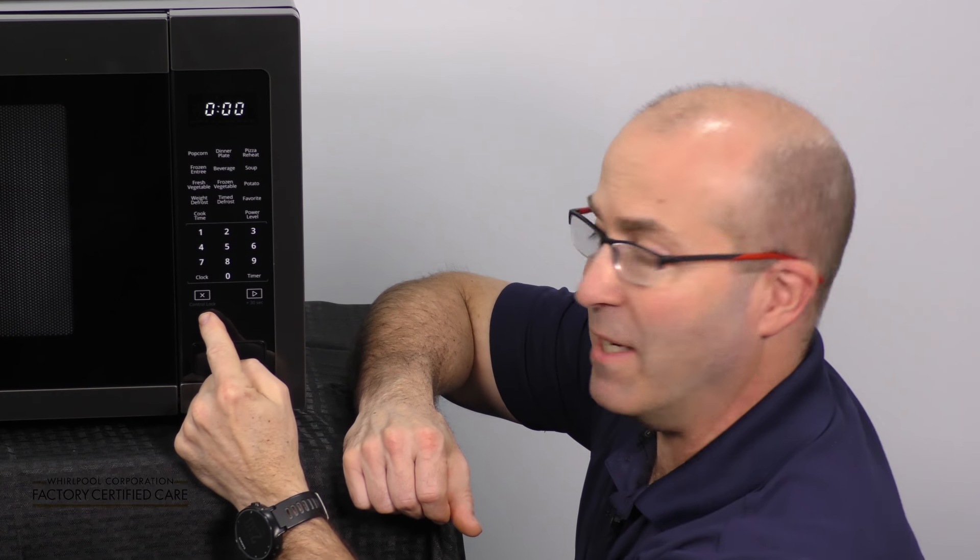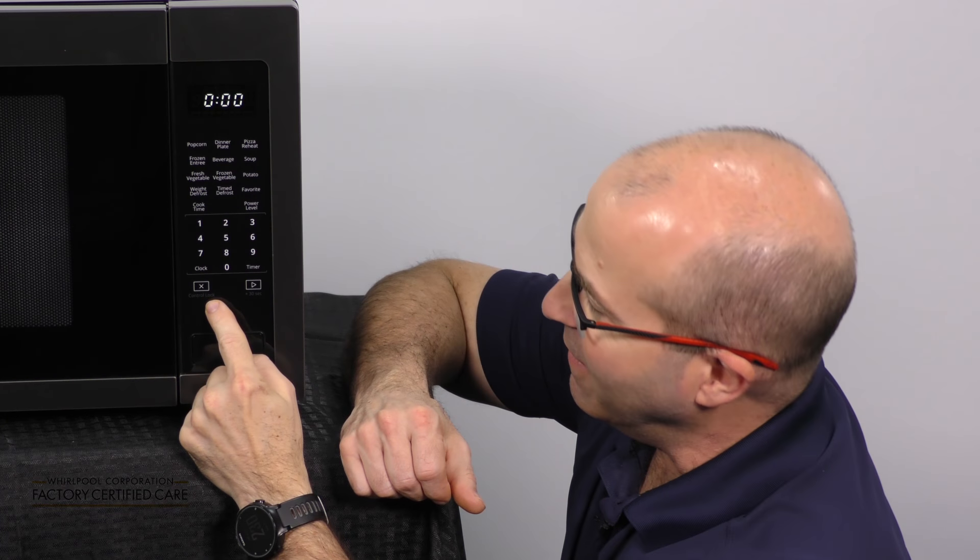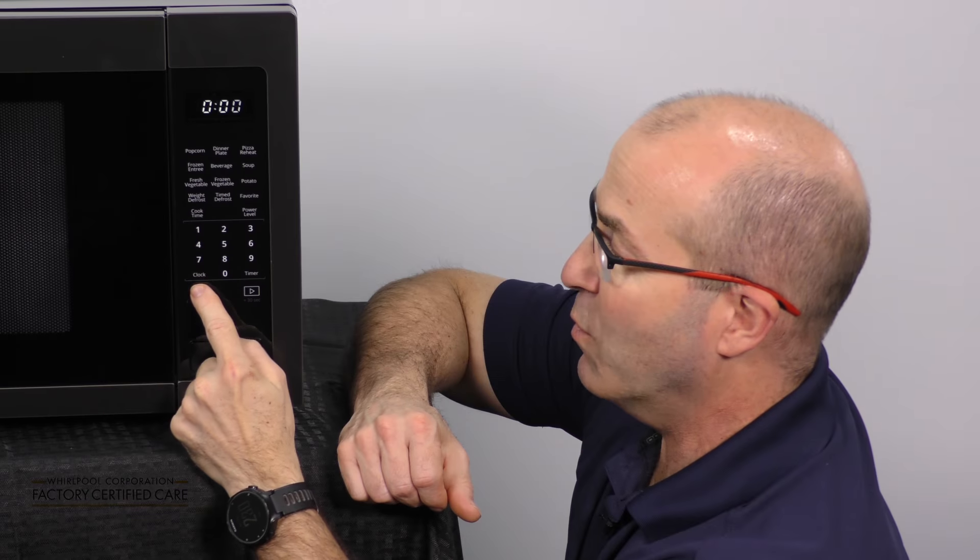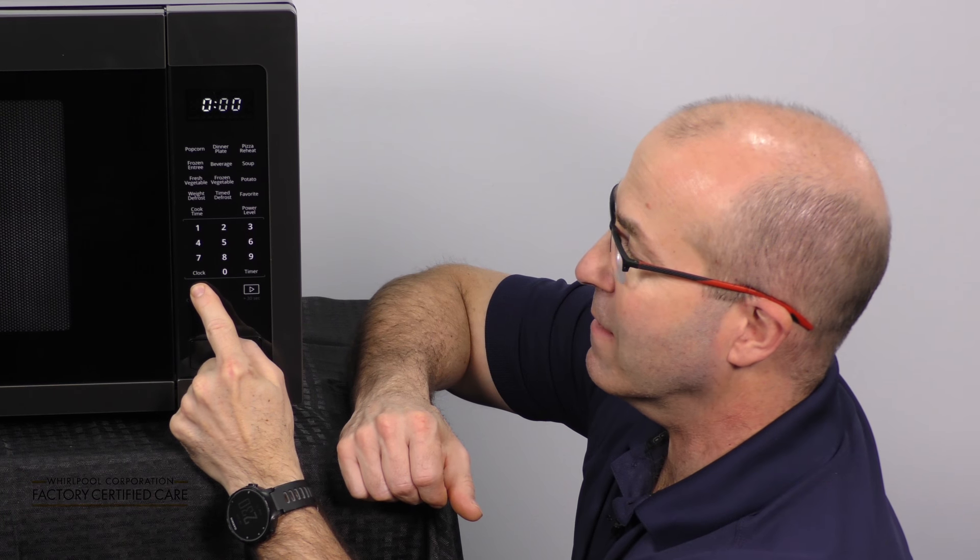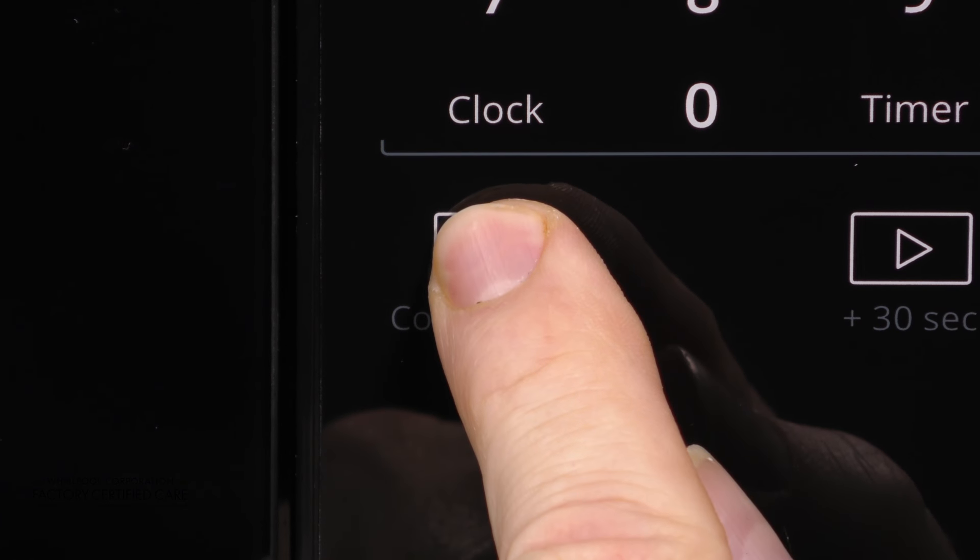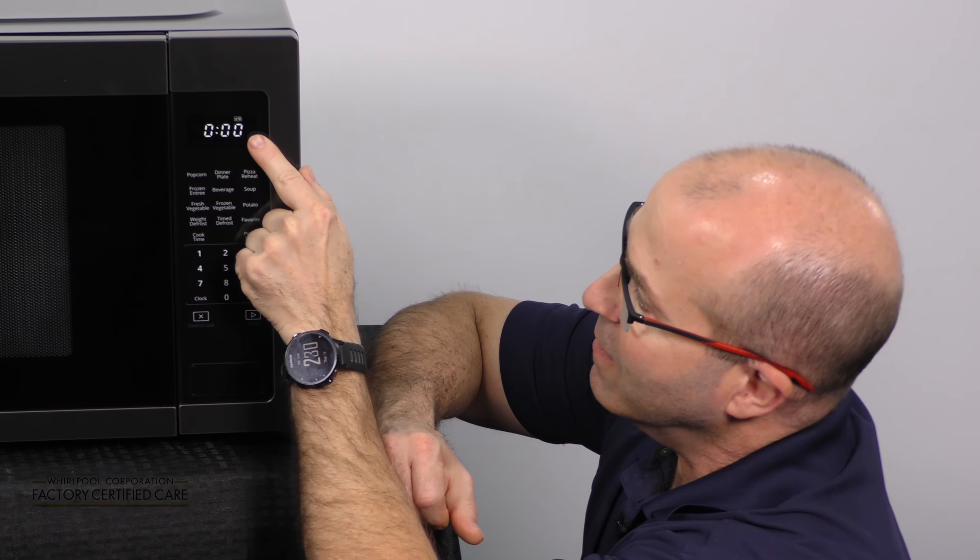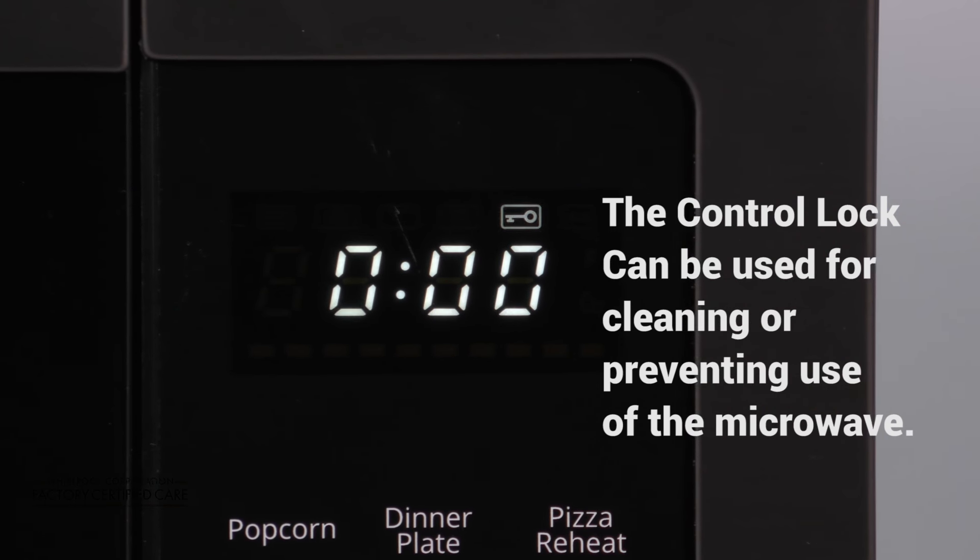This is your cancel button. It's a button that's marked X and just grayed out below it, it does say control lock. You push this button for three seconds and that icon will appear just above the timer and it's a little key.